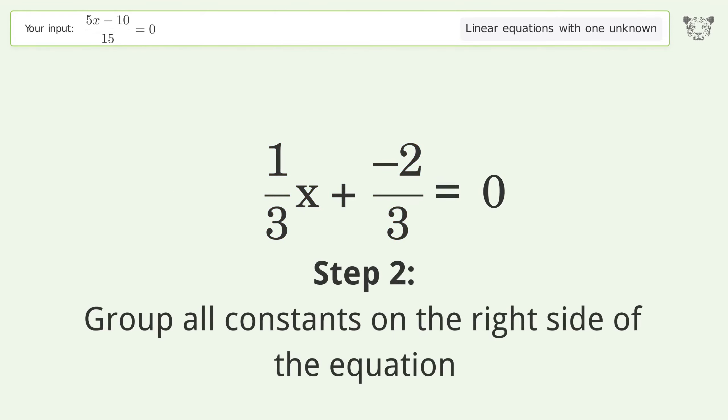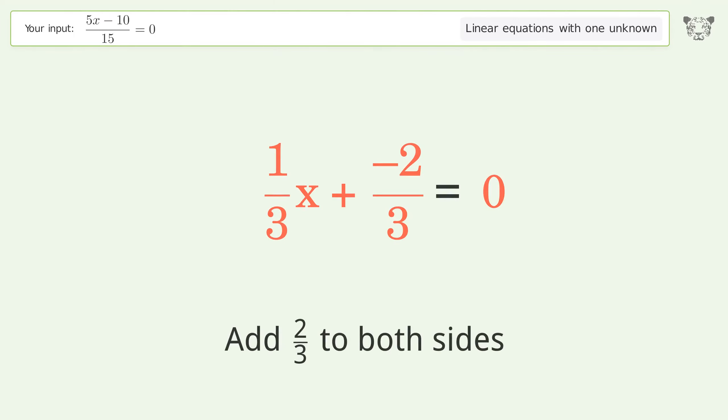Group all constants on the right side of the equation. Add 2 over 3 to both sides.